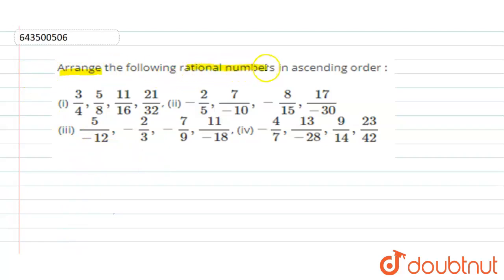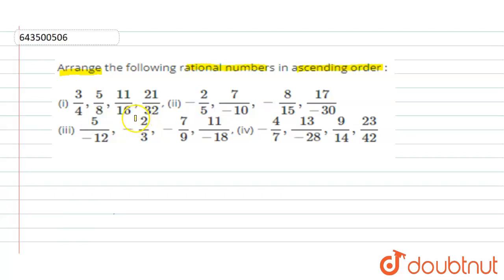Our question is: arrange the following rational numbers in ascending order. First set: 3/4, 5/8, 11/16, and 21/32. Second set: -2/5, 7/(-10), -8/15, and 17/(-30). Third set: 5/(-12), -2/3, -7/9, and 11/(-18). Fourth set: -4/7, 13/(-28), 9/14, and 23/42.